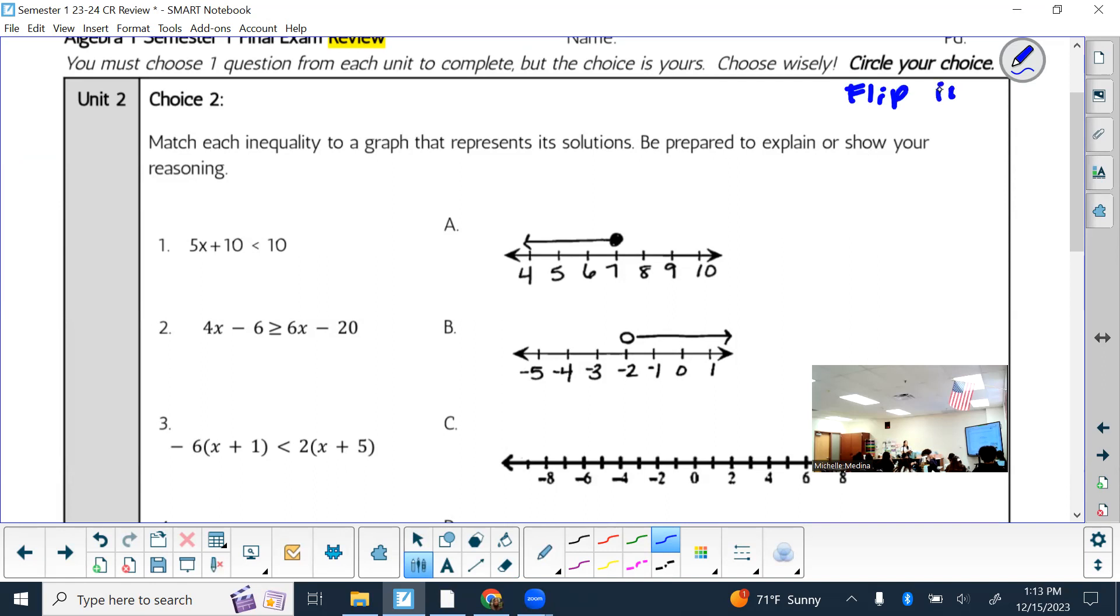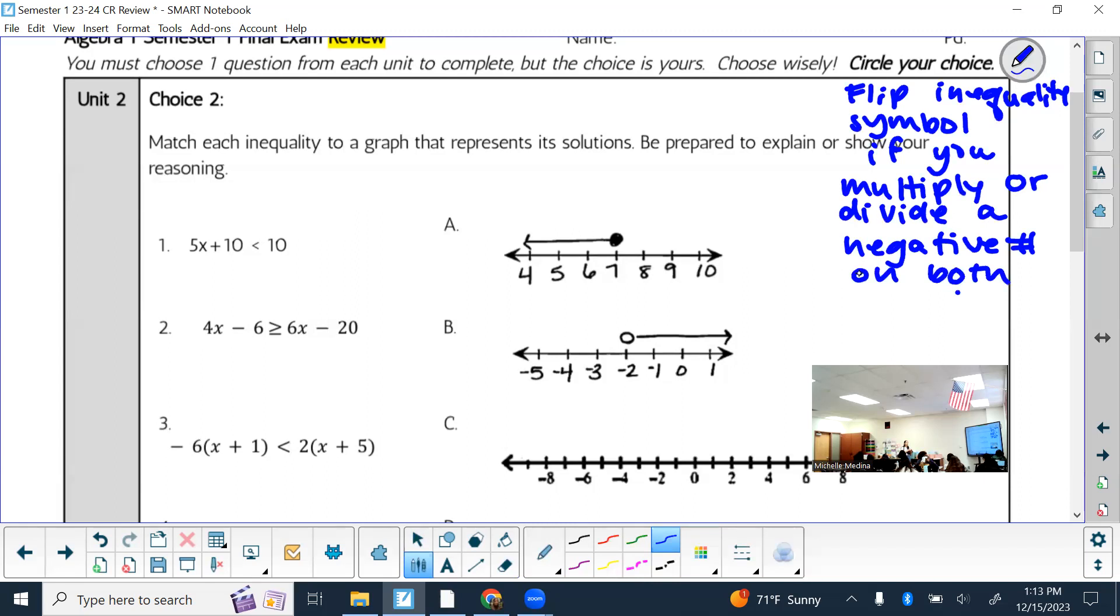So flip inequality symbol, so write this down if you don't know. If you multiply or divide a negative on both sides. And when I say on both sides, I'm talking about on both sides of the inequality, not just in general. It has to be on both sides of the inequality symbol. If I multiply or divide a negative, then I flip that. Otherwise, you leave it alone. You keep it there as if it was an equal sign.